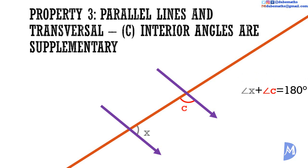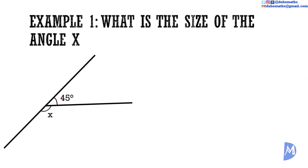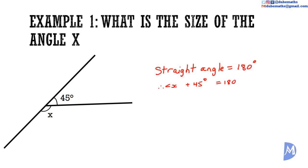We can use these rules to solve problems. Example 1: what is the size of angle X? We know that a straight angle is equal to 180 degrees. Therefore, 45 degrees plus angle X gives 180 degrees, which gives that angle X is equal to 180 minus 45, so angle X is equal to 135 degrees.